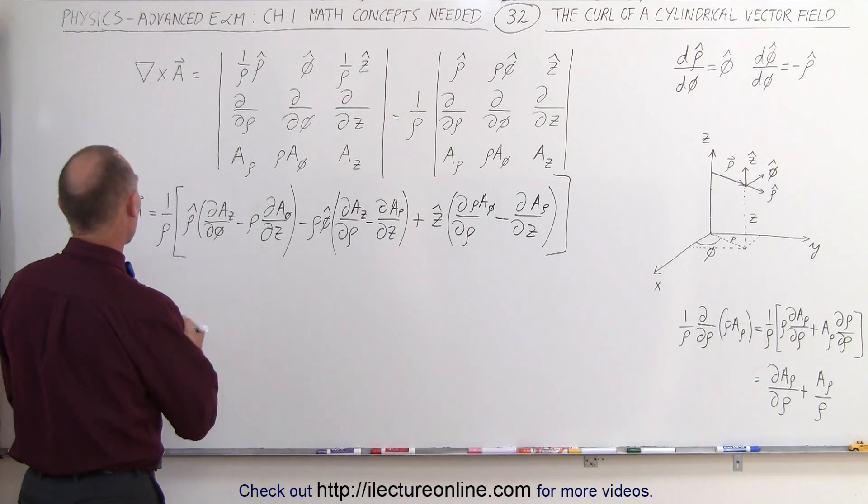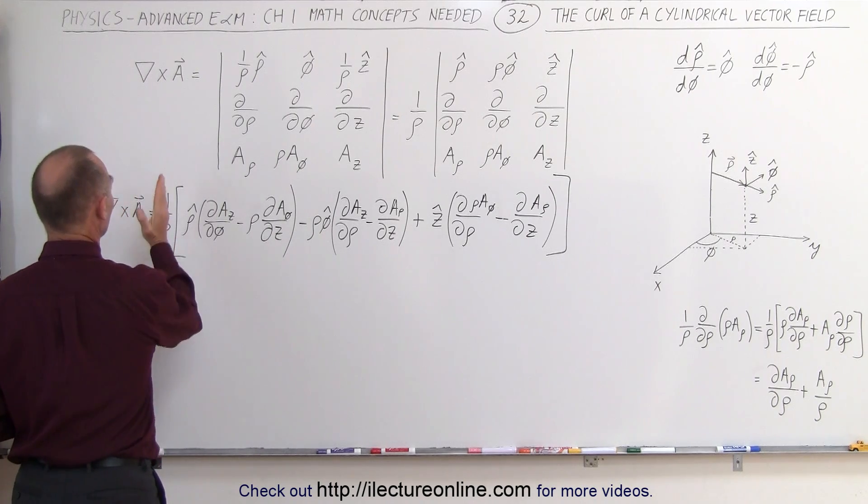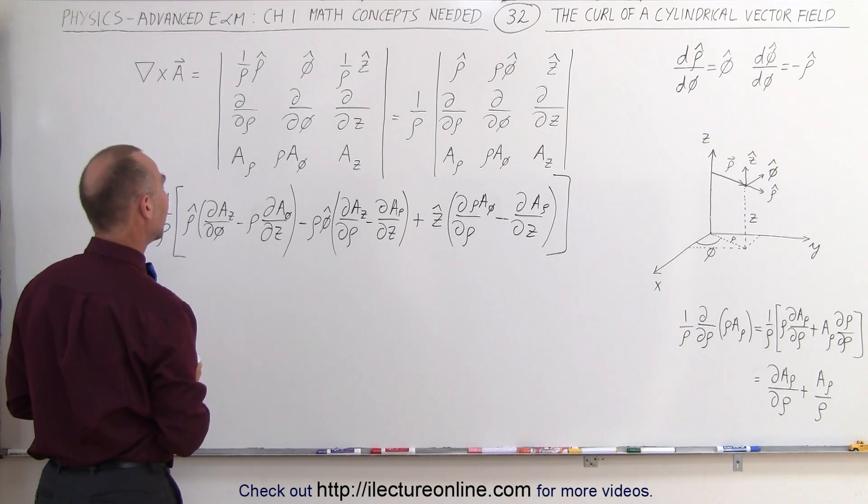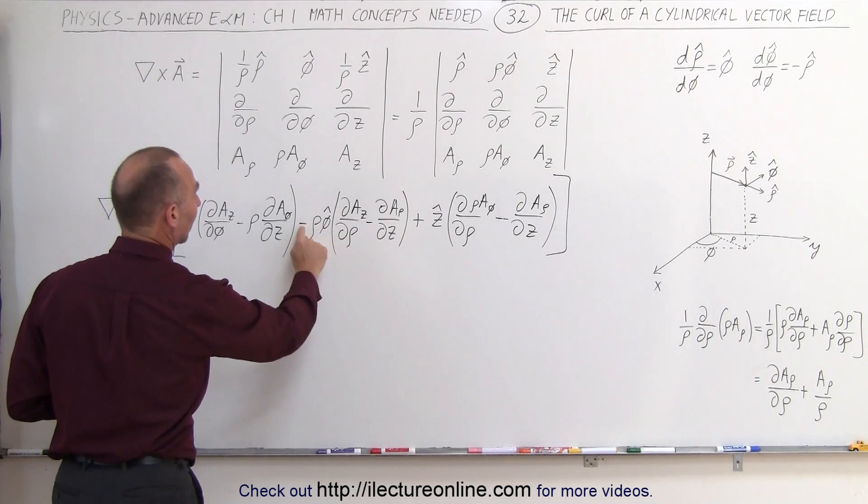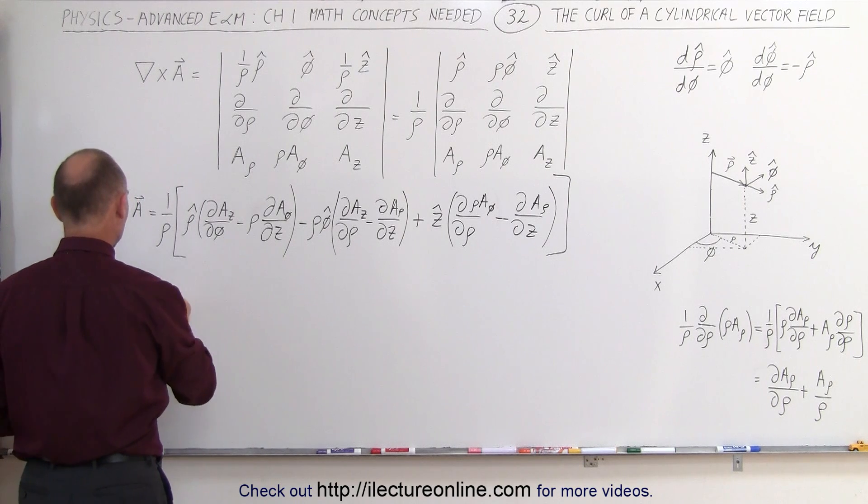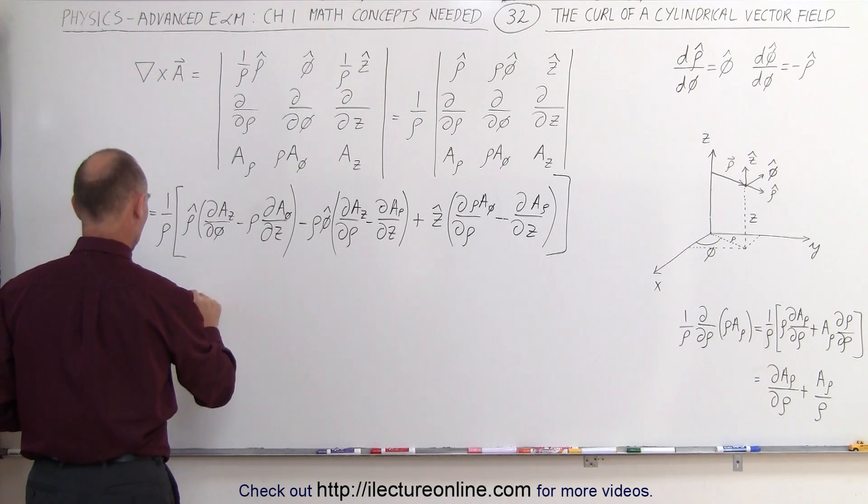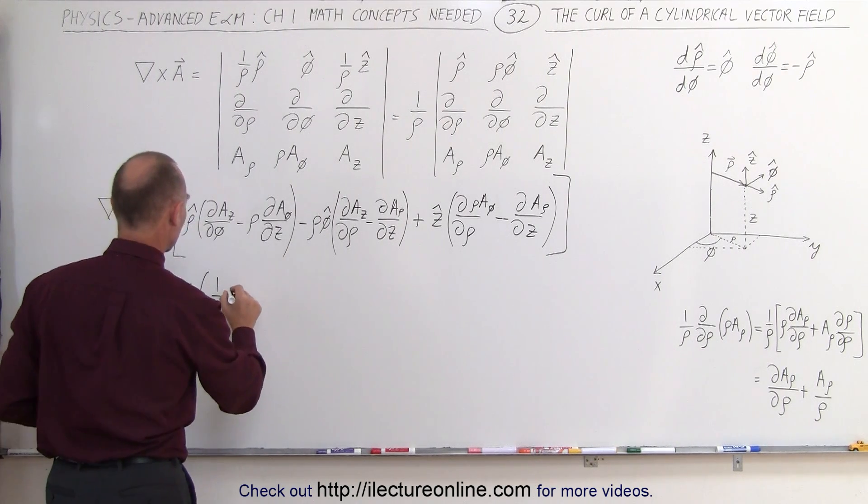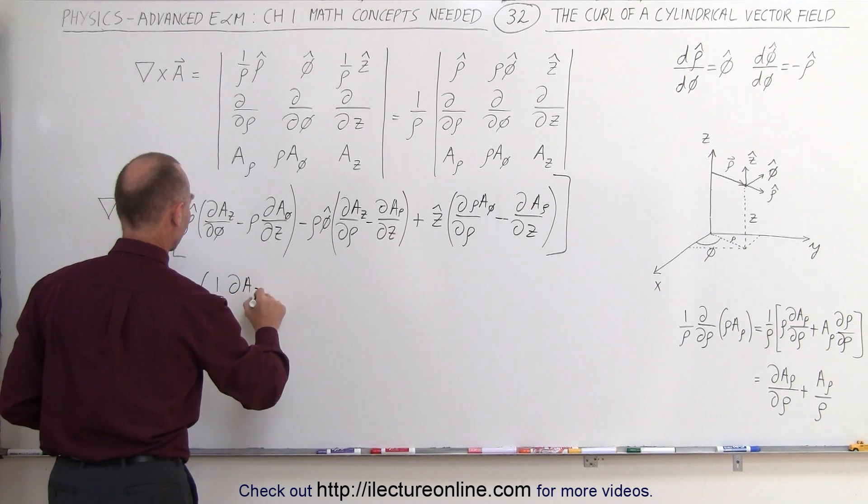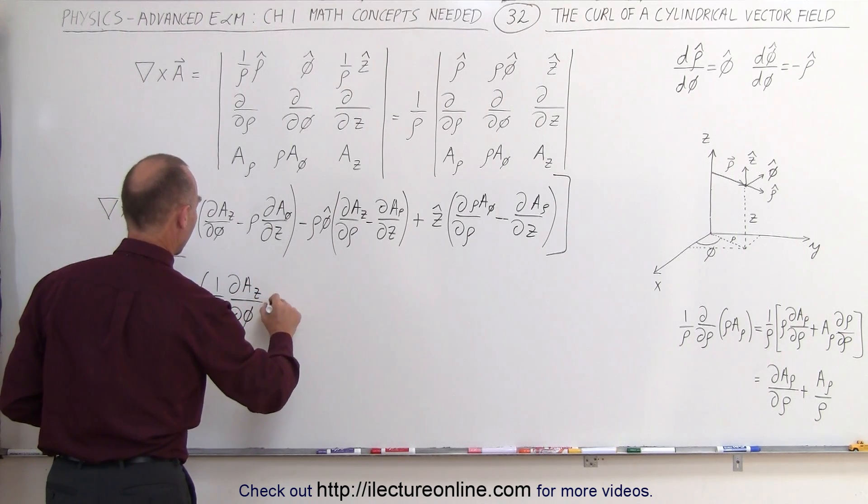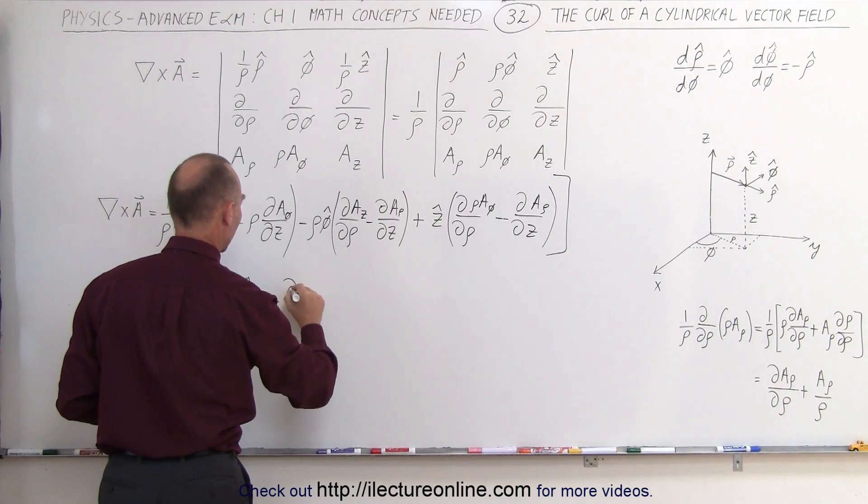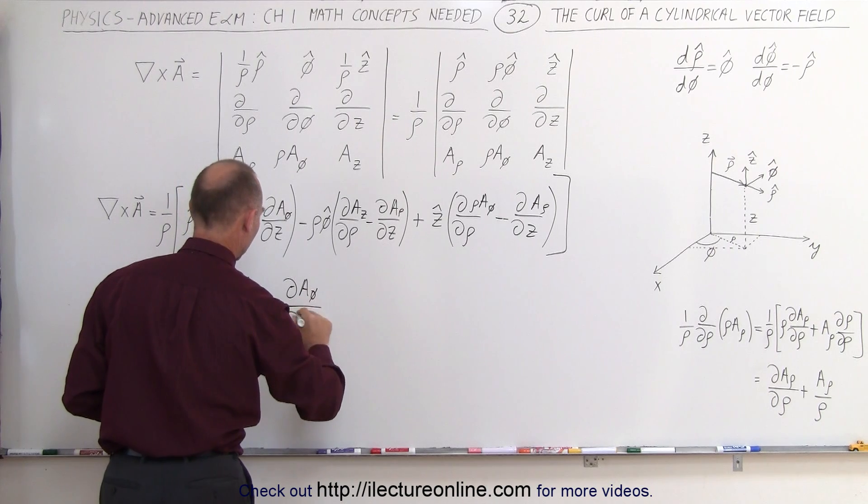So, simplifying this, we'll look as follows, first of all, we're going to multiply the 1 over row in with all the terms inside, and then we're going to switch these two around and making that into a positive, so this will then look as follows, this is equal to the row unit vector times 1 over row, when we multiply this through, times the partial of a sub z with respect to phi, minus, now 1 over row times the row, they cancel out, so we're left with the partial of a sub phi with respect to z.